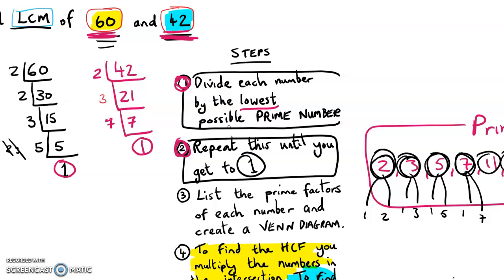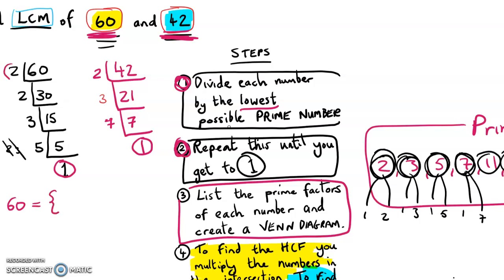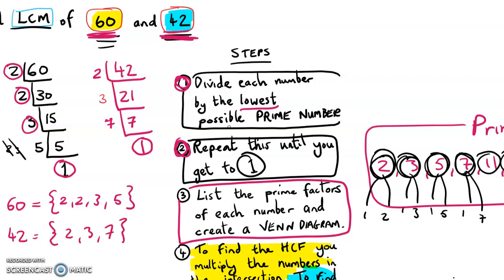Now I'm on to step 3, which is listing these prime factors. What are the prime factors of 60? There's a 2, another 2, a 3, and a 5. So they're the prime factors of 60. And what are the prime factors of 42? That is 2, 3, and 7. They all go into 42 — they're the prime numbers that can divide into 42.